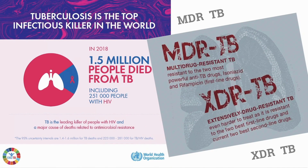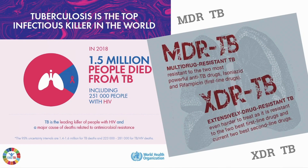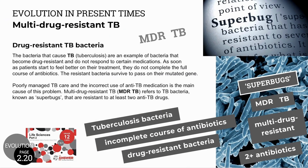An example of antibiotic-resistant bacteria is seen in TB or tuberculosis, which is the largest cause of death from infectious diseases in the world. There are two types of resistant TB: MDR-TB (multi-drug-resistant TB) and XDR-TB (extensively drug-resistant TB). MDR-TB develops when patients don't complete the full course of antibiotics, allowing mutant drug-resistant bacteria to survive, multiply, and pass on their resistant mutated gene. MDR-TB is resistant to more than two antibiotics and is known as a superbug.